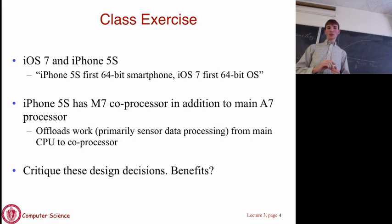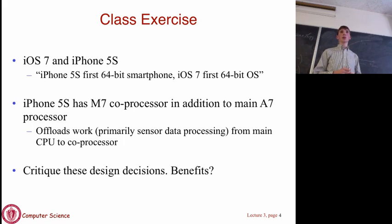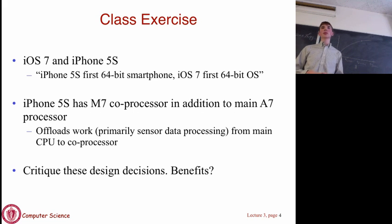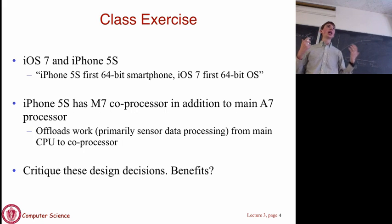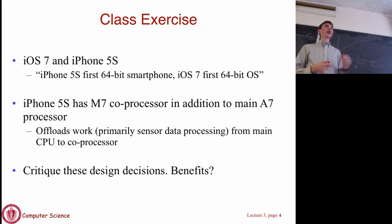If you know what your task is, you can make fixed-function hardware that uses a lot less power than a generalized processor. The coprocessor is inherently specialized—it can't do everything, but the things it does do, it will be very efficient at, using less power and doing it faster than the main processor.